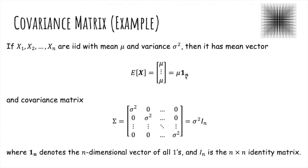And the covariance matrix will look like this. So sigma squared along the diagonal, because each of these random variables has variance sigma squared, and 0 everywhere else, because all the variables are independent. So the covariance will be 0. And so you get sigma squared times identity matrix.